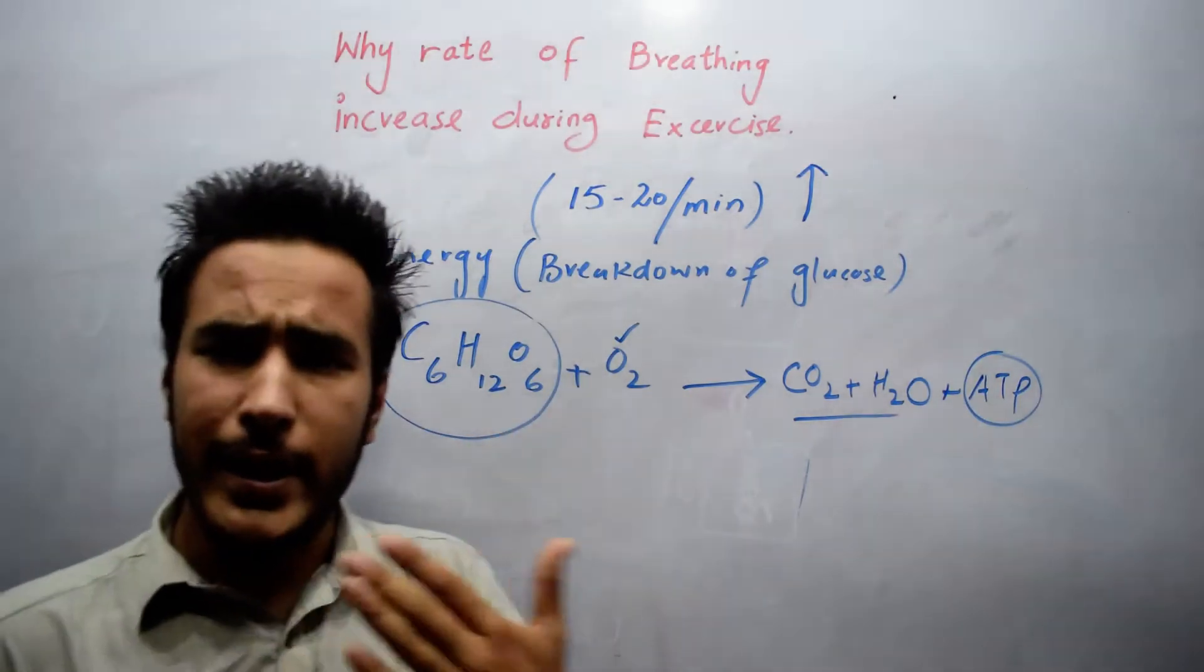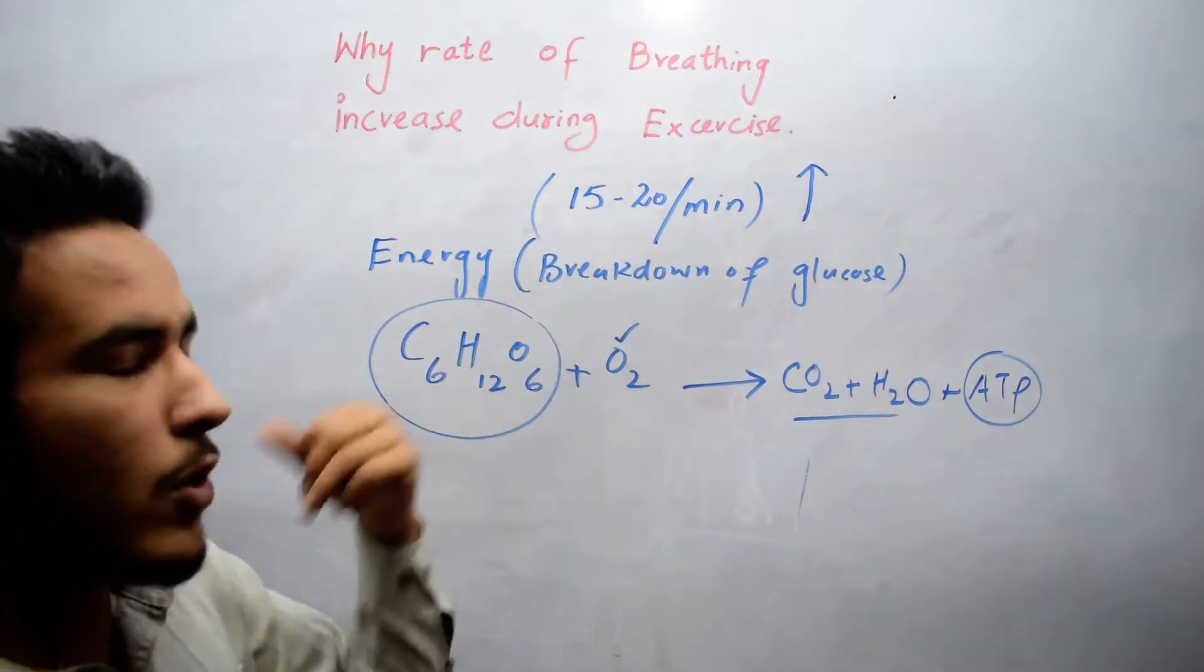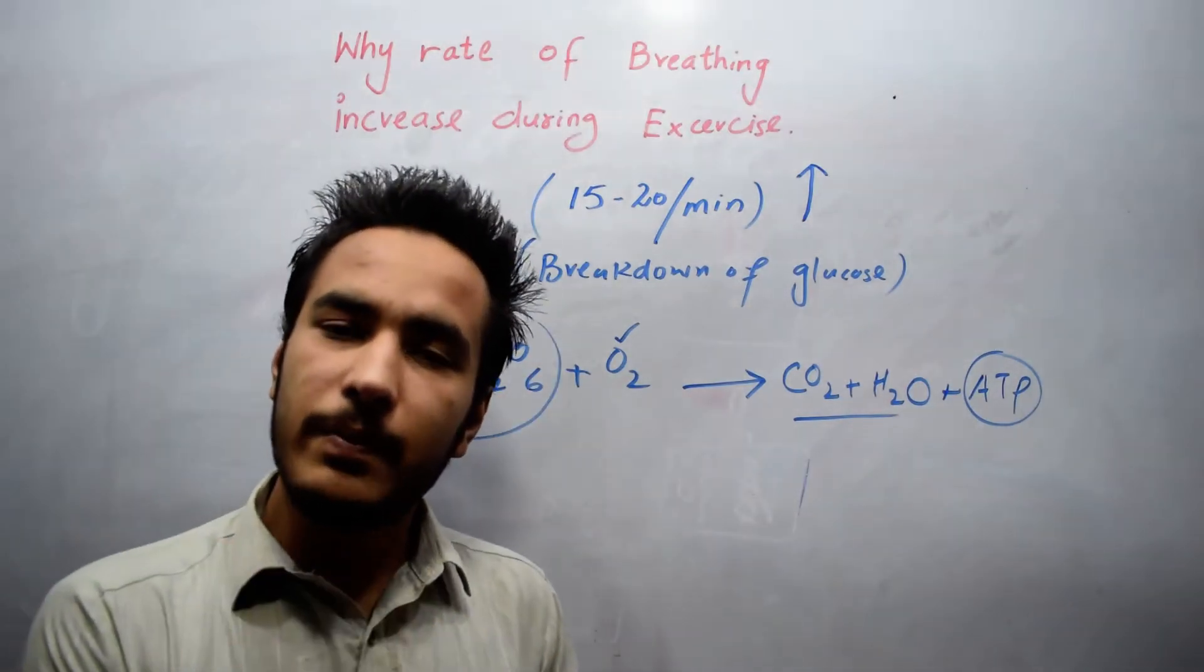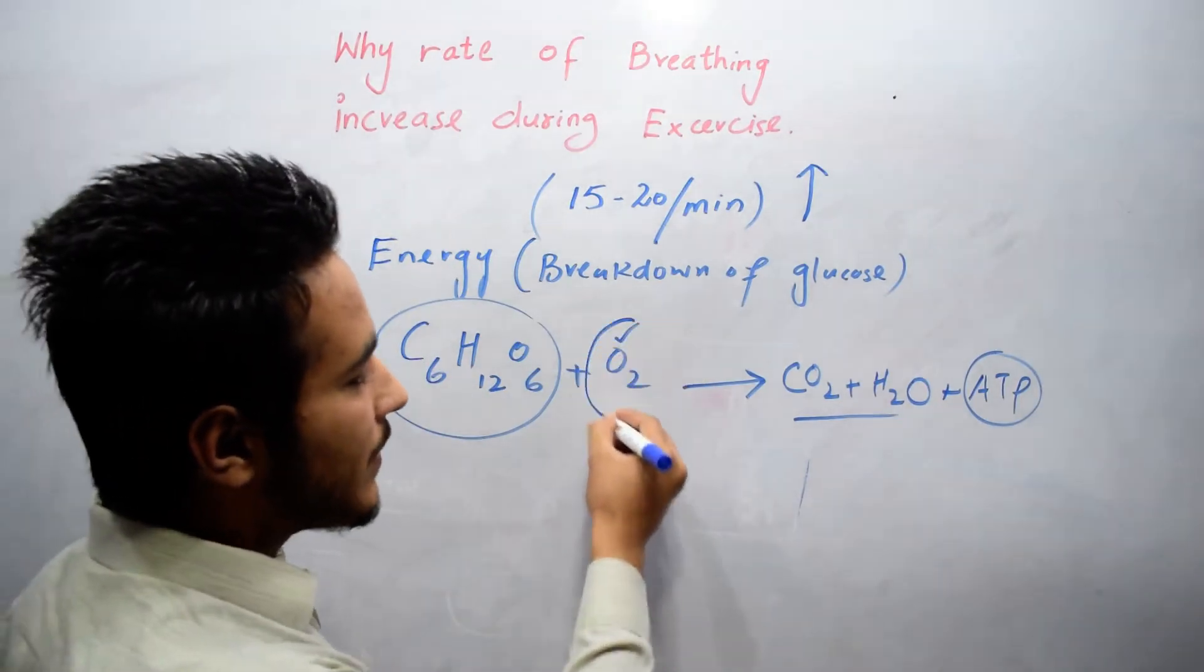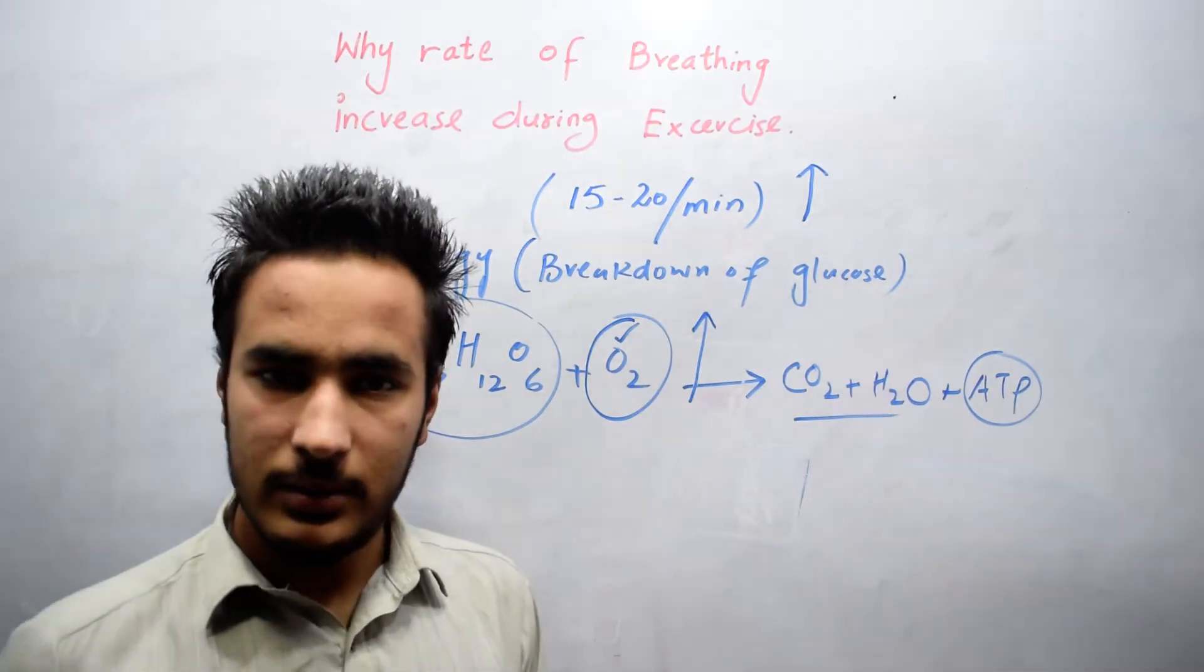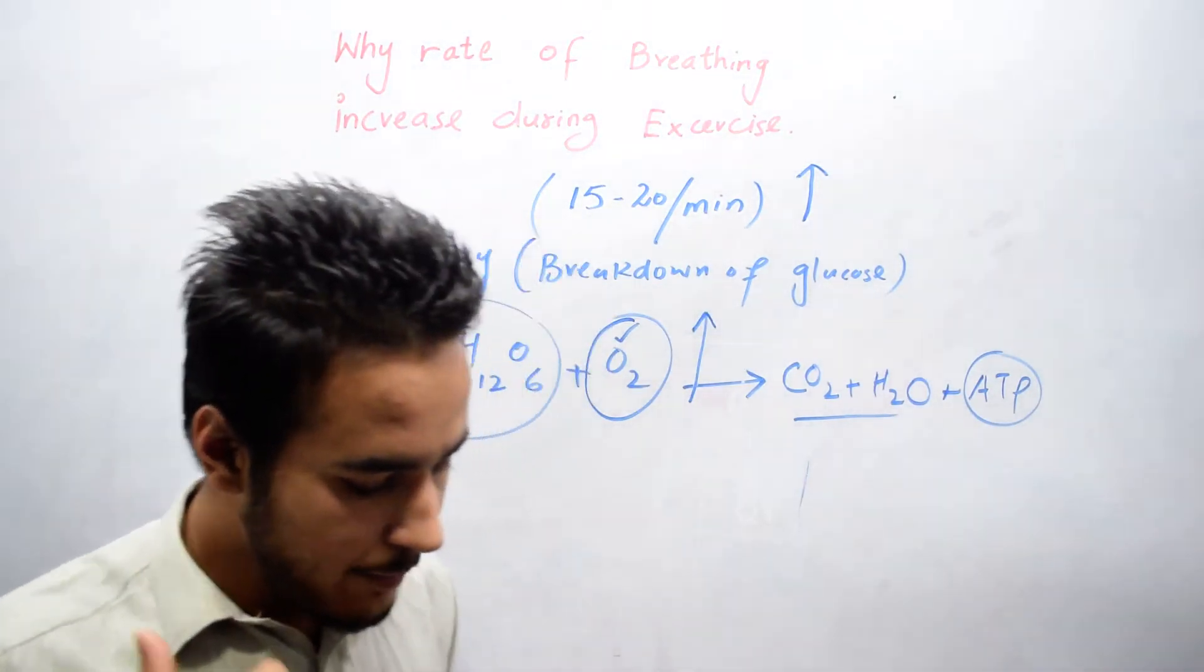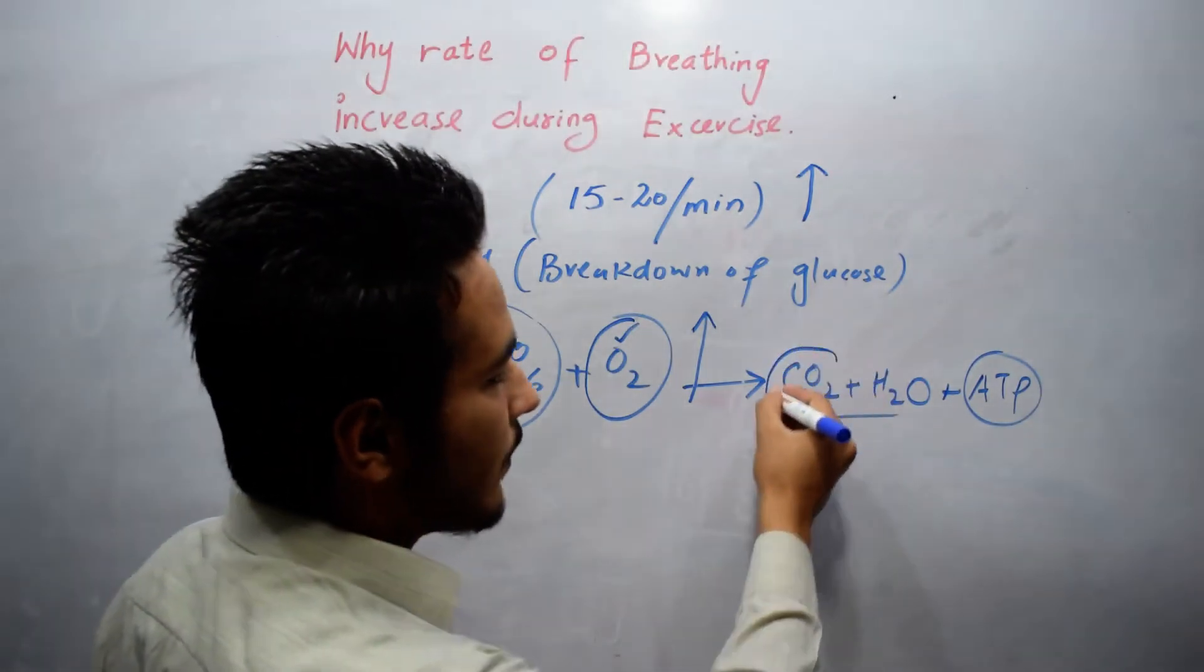Now if we are doing activity, our muscles will require more energy. So for the breakdown of glucose, more oxygen is required. For this purpose, if more oxygen is required, more carbon dioxide will be produced.